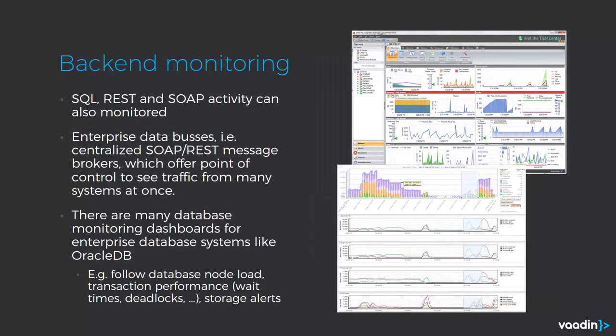That covered client monitoring. You can also monitor back-end activity, and there are many tools for that as well. For example, professional enterprise database systems like Oracle DB have built-in dashboards, and many third-party tools are available to analyze your database traffic. This can help you understand transactional performance — for example, if there are a lot of wait times in your transactions that need to be optimized — as well as storage alerts when the space reserved for the database is becoming critical. The same can be done for SOAP and REST type calls.